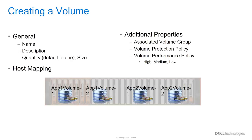To create a volume, the administrator has to provide a name and the size. In addition to general information, there are also additional properties that can be set, such as associated volume group, volume protection policy, and volume performance policy, which defaults to medium. This performance policy determines how many system resources the volume will receive if the processing power of the system becomes fully utilized. This is a relative ranking, so resources with a high value receive more than those with medium or low.